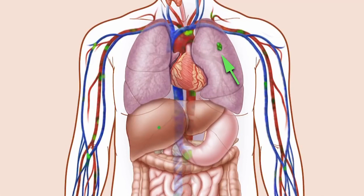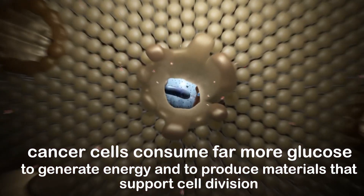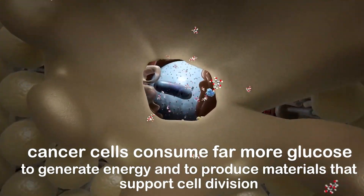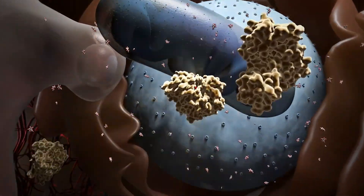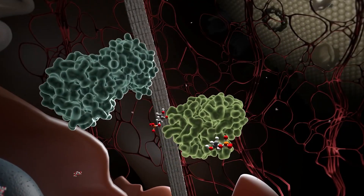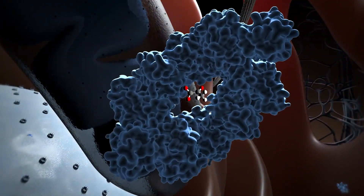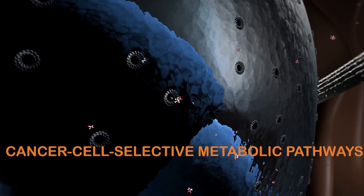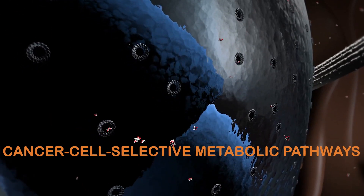It is now becoming clear that these metabolic differences may be a driving force of cancer cells. For example, cancer cells consume far more glucose to generate energy and to produce materials that support cell division. This insight will open the way to new approaches that treat cancer by disrupting cancer cell-selective metabolic pathways, resulting in more effective and less toxic drugs.